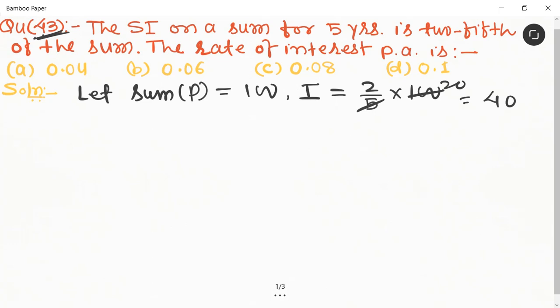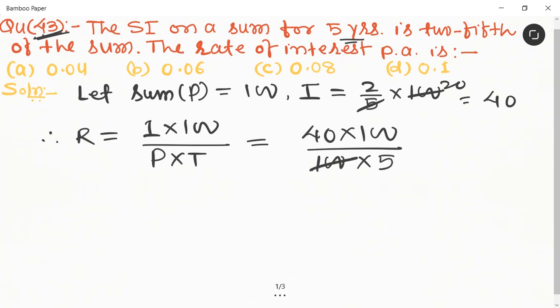Therefore, rate of interest equals I × 100 divided by P × T. So it equals 40 × 100 divided by 100 × 5. 100 and 100 cancel, and 40 divided by 5 is 8, so eight percent per annum.